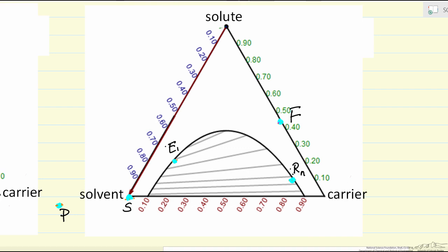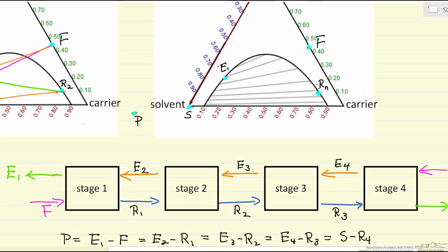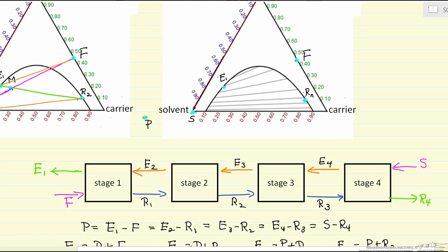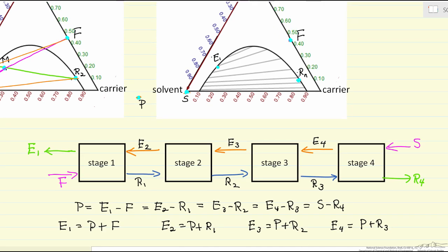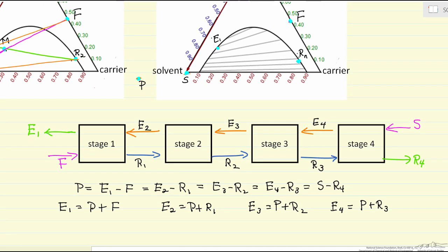Let's look at the case where there's four stages. I'm doing that because I've already solved the problem, and that's approximately the number of stages it's going to take. Then we had mass balances, again derived in the first screencast, that said the flow rate E1 minus F, this difference, the net flow out here, must be the net flow in here, otherwise we're not at steady state.